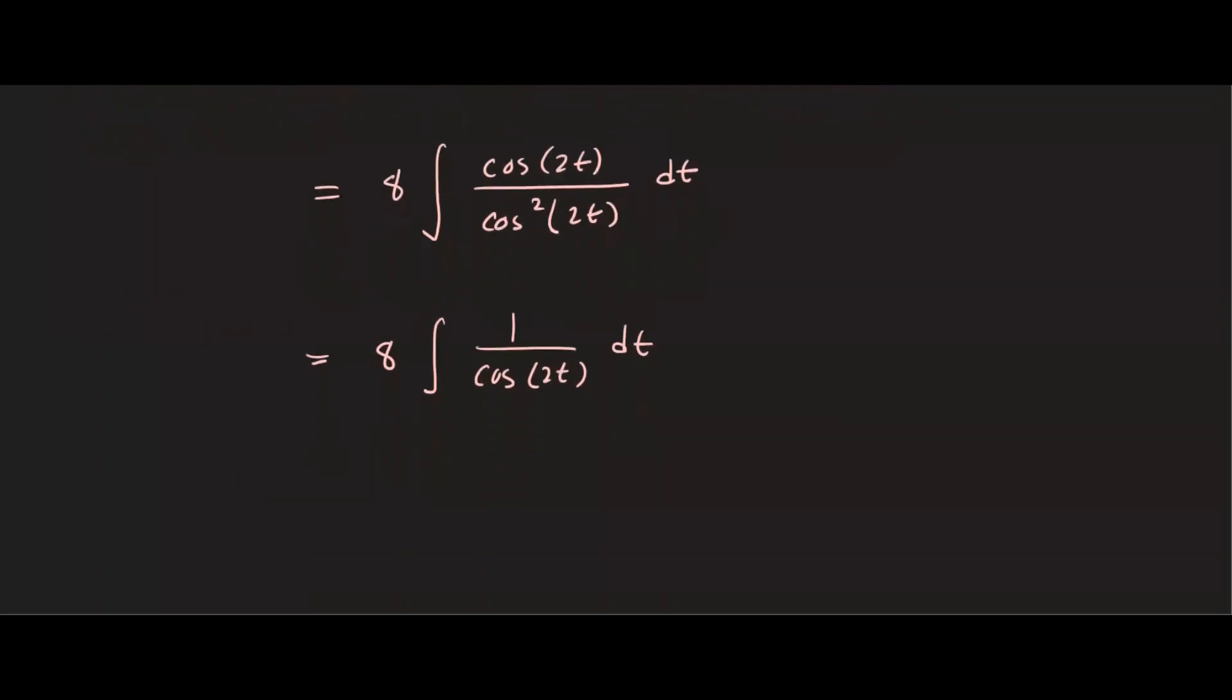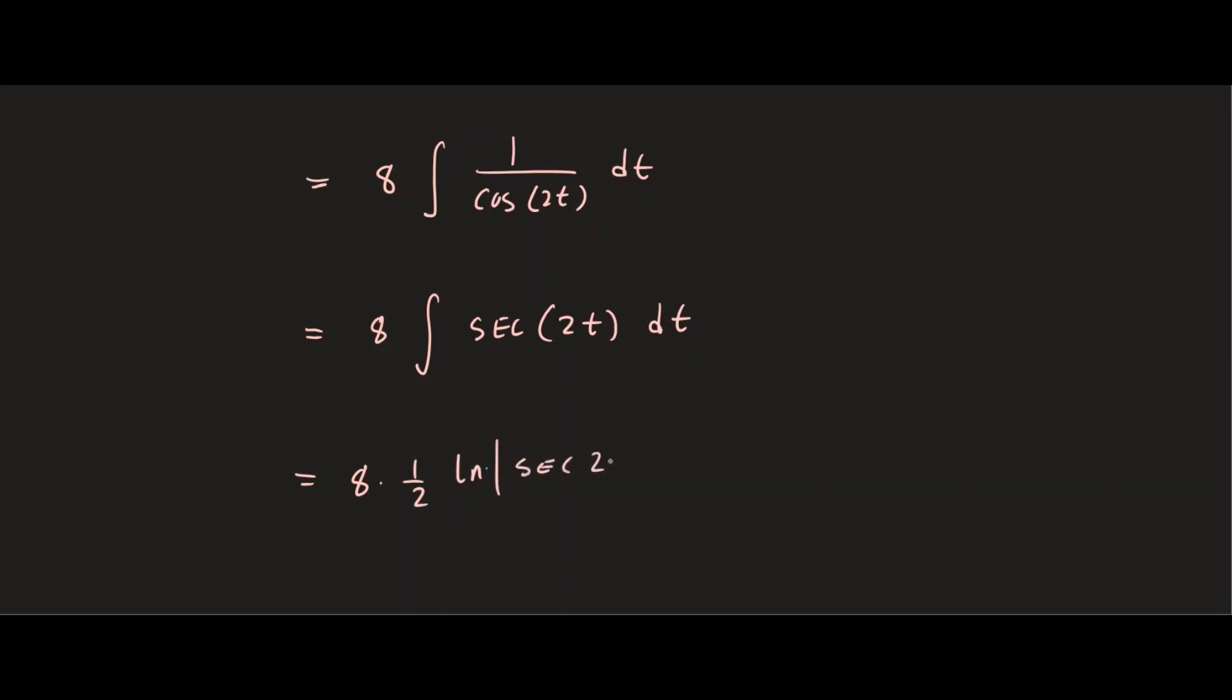And now you can integrate this by rewriting as secant. So we have 8 integral of secant of 2t dt. And you should know by now the integration of secant from calculus. This equals 8 times 1 half ln of absolute value of secant of 2t plus tangent of 2t.